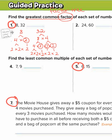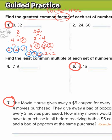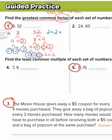Now we're going to circle all of the common prime factors. They each have a 2, a second 2 in common, and a third 2 in common. The 32 has two more 2's but 8 doesn't, so those last 2's are not in common. We multiply the common factors — each used only once — so that's 2 times 2 times 2. 2 times 2 is 4, and 4 times 2 is 8. So 8 is the greatest common factor — the biggest number that can go into both of these numbers.